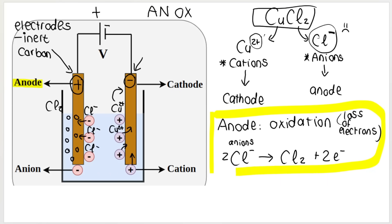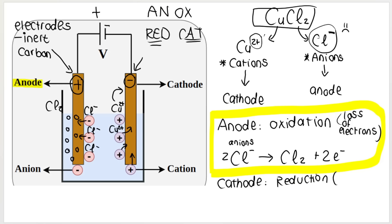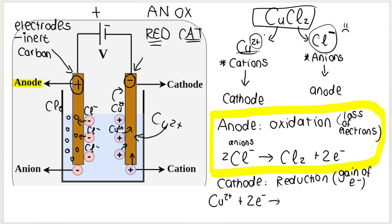What is happening at the cathode? Immediately we know that at the cathode, reduction takes place. How do we know that? Red cat — at the cathode, reduction takes place — and reduction is the gain of electrons. Because our copper 2-plus ions — our cations — were attracted to our cathode, we know that the Cu2-plus ions are going to gain those electrons. And what forms? Copper 2-plus plus 2e-minus — that actually forms solid copper.